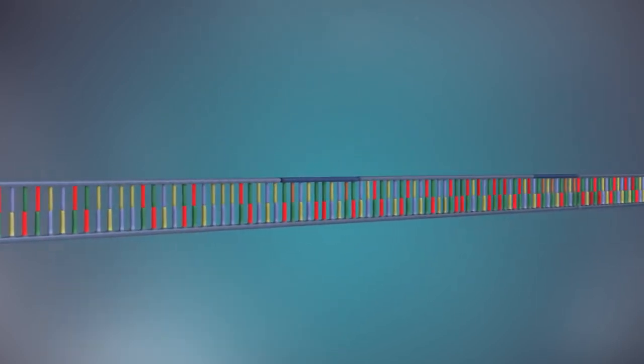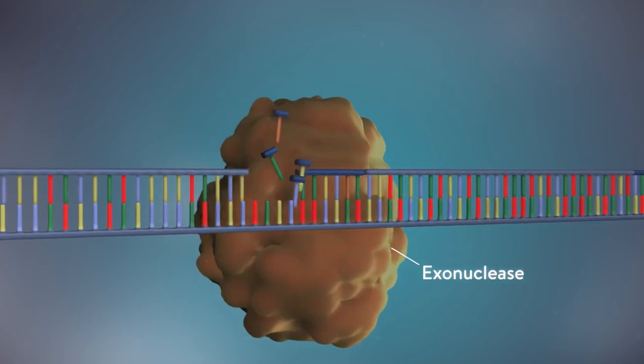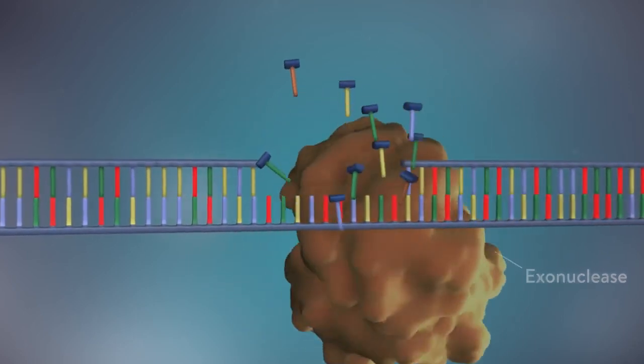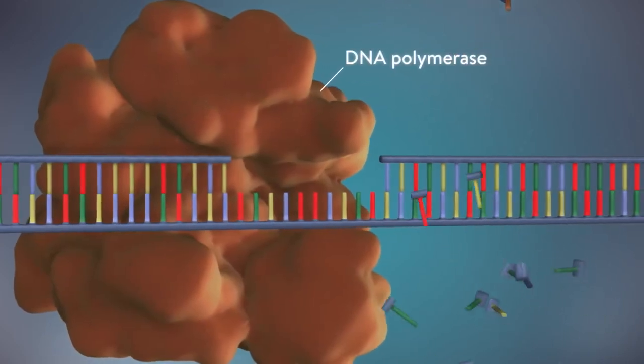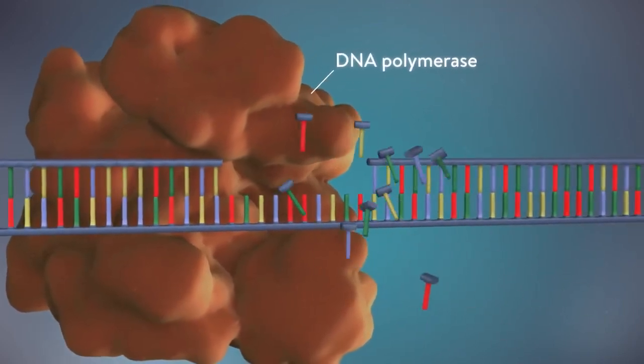Once the new DNA has been made, the enzyme exonuclease removes all the RNA primers from both strands of DNA. Another DNA polymerase enzyme then fills in the gaps that are left behind with DNA.